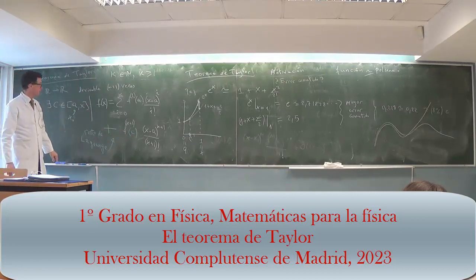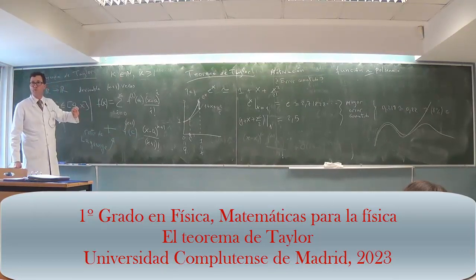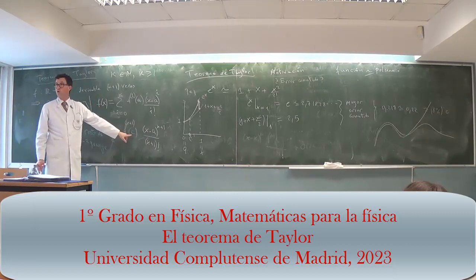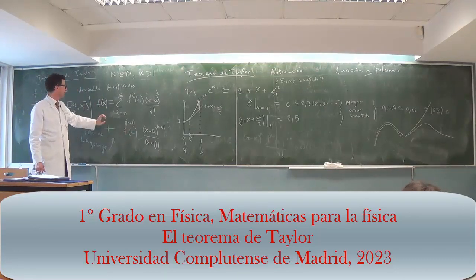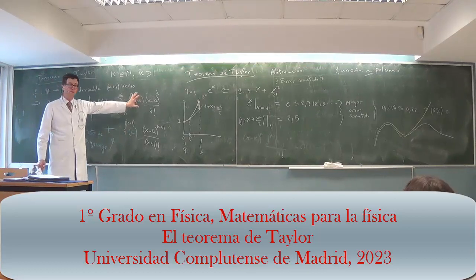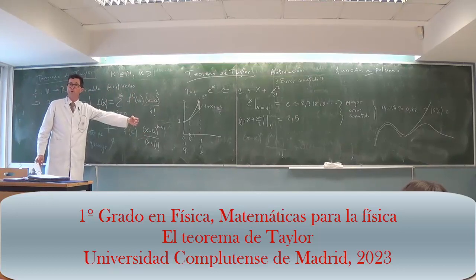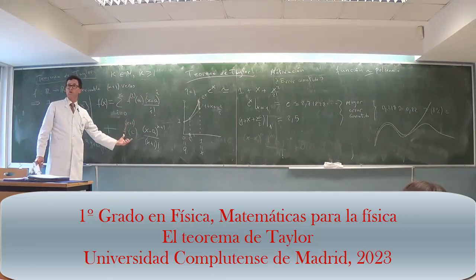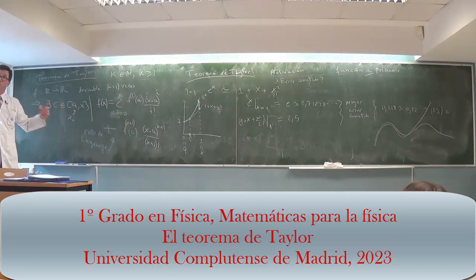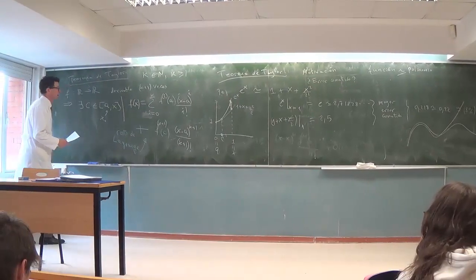The remainder would be the first term not included in the polynomial — the next term — but evaluated at a point I don't know. What I can do is bound it. Let's prove it.